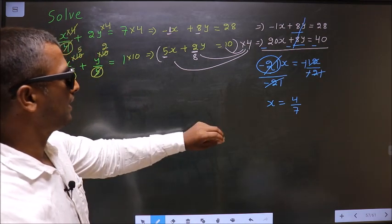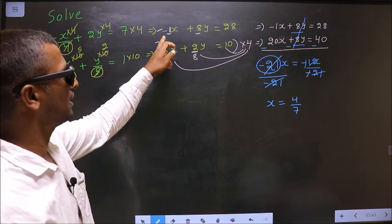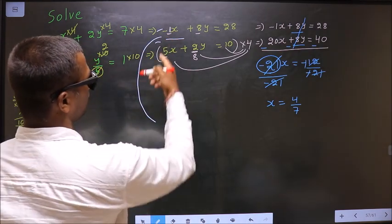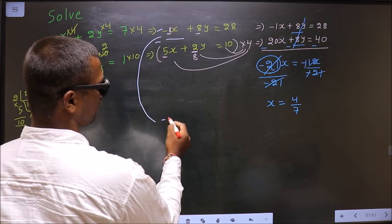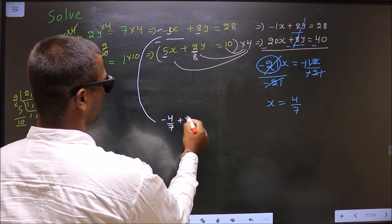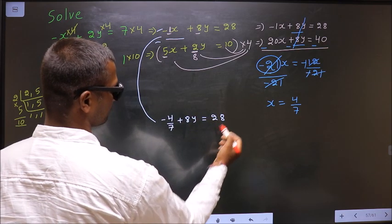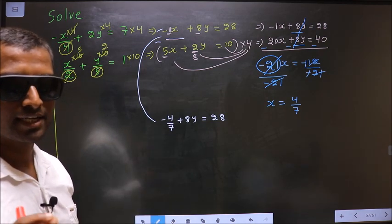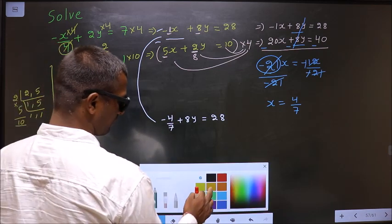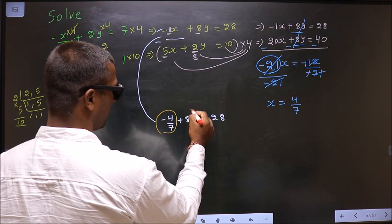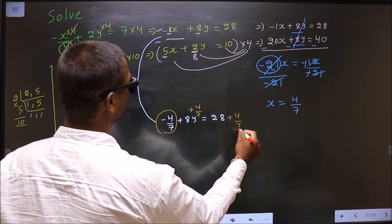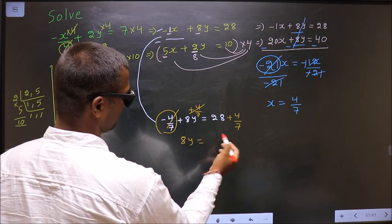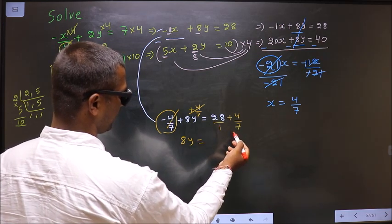Now to get y, replace this in any one of the equations. Let us say I replace in this. So in place of x, -1 times 4/7 is -4/7, plus 8y equal to 28. So now to get y, I should make y the subject. That means remove all the connections connected to y one by one. Starting with -4/7, to remove this, add 4/7. So this cancels out, I get 8y equal to.